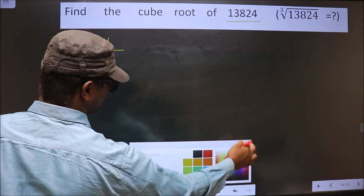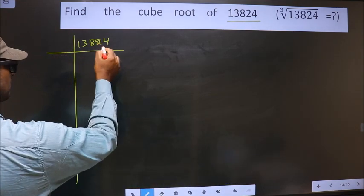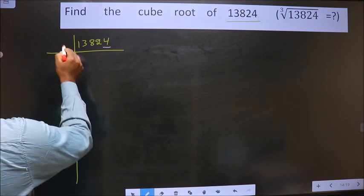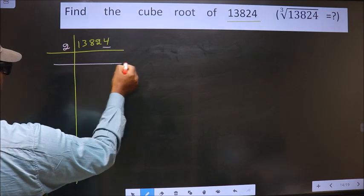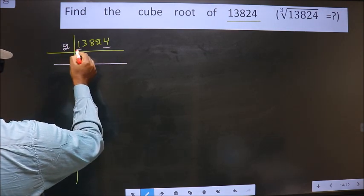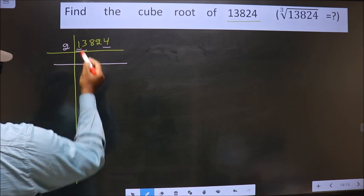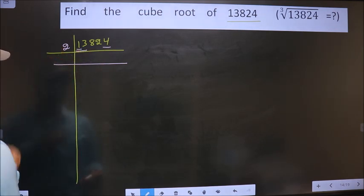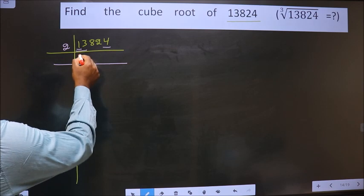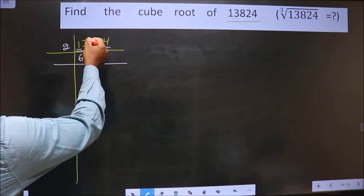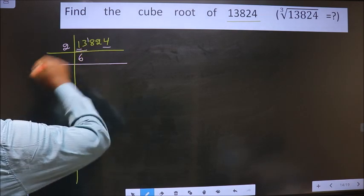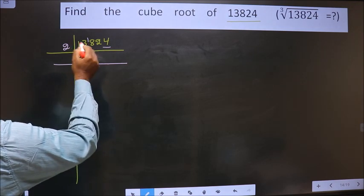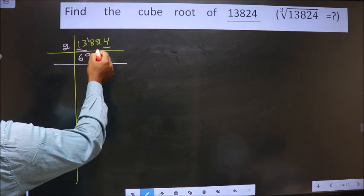For this number, the last digit is 4, which is even, so we take 2 as the divisor. The first number is 1, which is smaller than 2, so we take 2 digits, that is 13. A number close to 13 in the 2 times table is 2×6=12. 13 minus 12 is 1, carried forward making it 18.